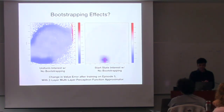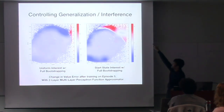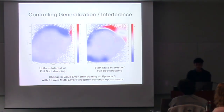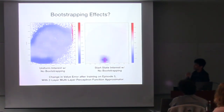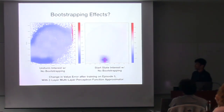This is also interesting with bootstrapping. If you look at the scale - this was 10 and that was one - when you don't use bootstrapping it reduces the value error, meaning we can also use bootstrapping as another way to control for value error. This was a question at a previous RLAI meeting - whether the amount of bootstrapping changes how much you interfere with your value estimates.